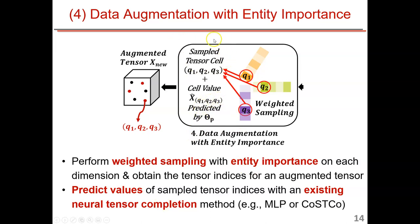After predicting the tensor indices and their values, we combine them and augment them into the original tensor — these are the red dots in our diagram. We then finish data augmentation, retrain the model, and observe boosted performance.